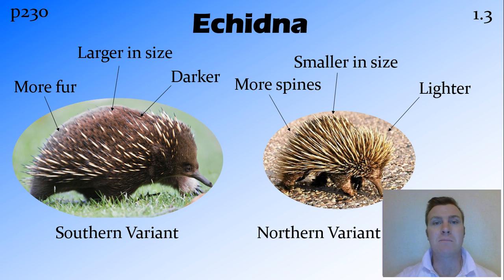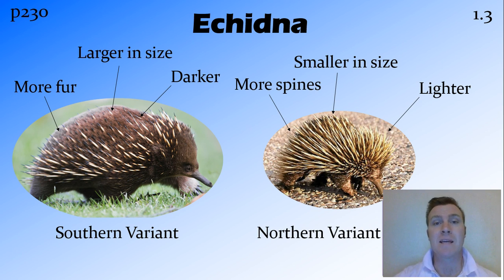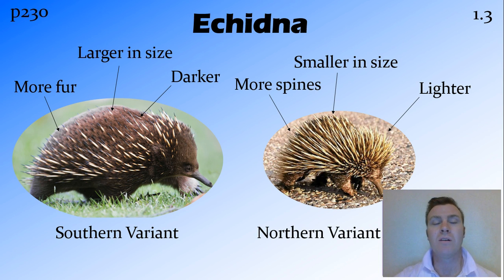There's variation within the species depending on where in Australia they're found. The southern variant, found in Tasmania, is larger, has more fur and fewer spines, and is also darker. More fur and fewer spines means more heat is kept in rather than being lost through those spines, which work like cooling fins. The northern variant, found in Queensland, needs to lose heat because it lives in a hot environment. It's lighter in colour so it can reflect heat, while the southern variant is darker to absorb more heat. The southern variant is also larger, giving it a lower surface area to volume ratio, making it more efficient at retaining heat. So these two short-nosed echidnas are the same species but look quite different.